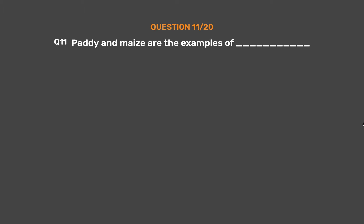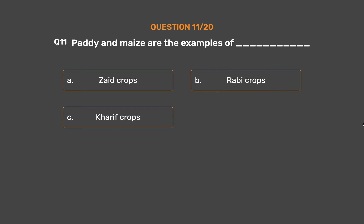Question No. 11: Paddy and maize are examples of ___. Option A: Zaid crops. Option B: Rabi crops. Option C: Kharif crops. Option D: None of these.